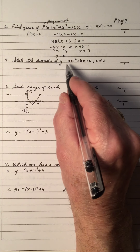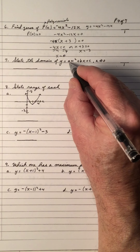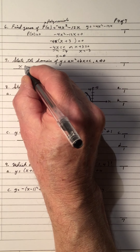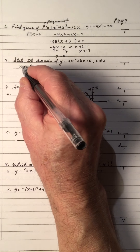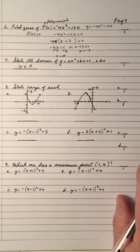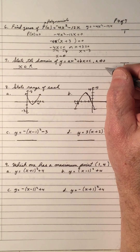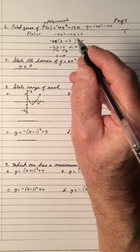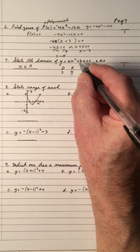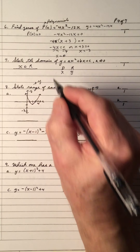State the domain: this is a parabola in standard form. Since a cannot be 0 for a quadratic, and every parabola accepts all x-values, the domain of every parabola is x is all real numbers. Give yourself a mark. Remember: domain corresponds to x-values, range to y-values — D before R, x before y alphabetically.